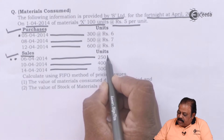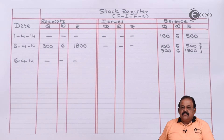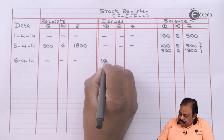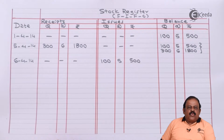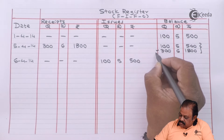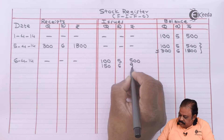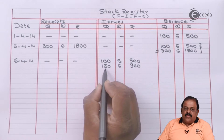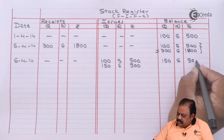On 6th April there is a sale of 250 units. Using FIFO, we issue the first 100 units from the opening balance, then 150 units from the 5th April purchase at Rs.6. Total issue is 250 units. Balance stock remains 150 units at the rate of Rs.6, amount Rs.900.